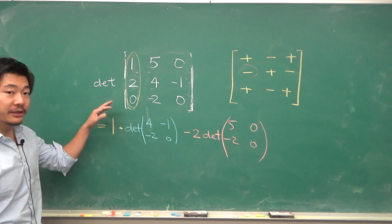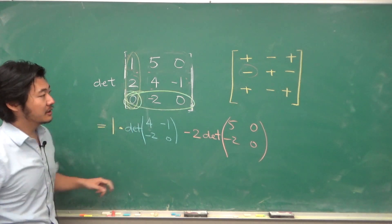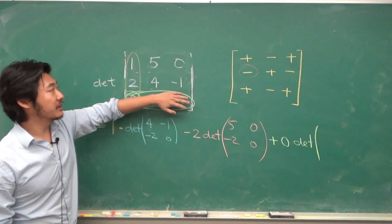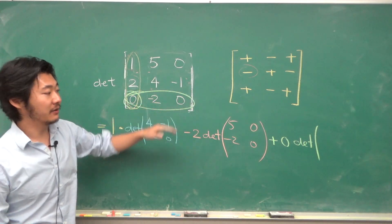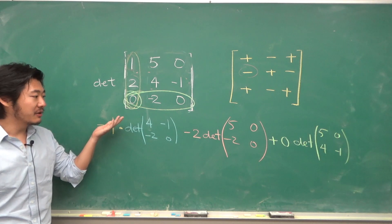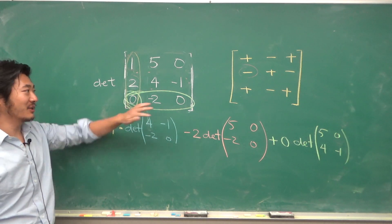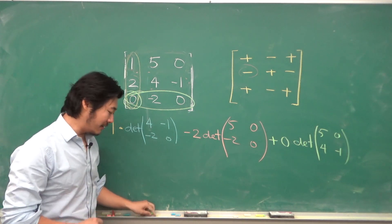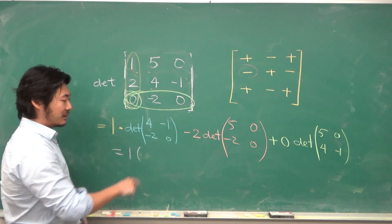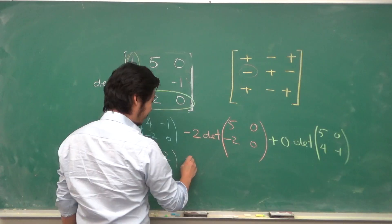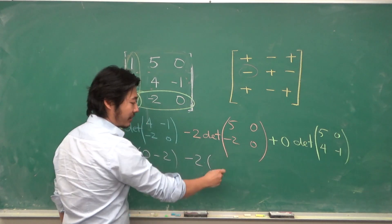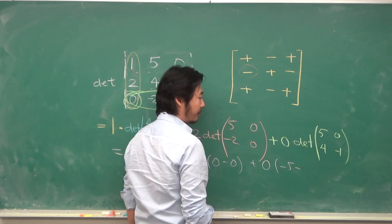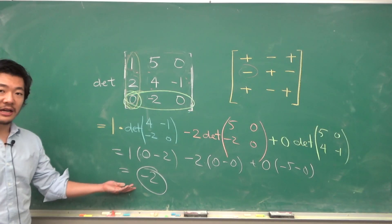Finally, we go down to the last row. It's at a plus sign, so it's plus 0 times the determinant of the submatrix 5, 0, 4, negative 1. Although we're multiplying by 0, so it doesn't really matter what that matrix was — but if it wasn't 0, it would matter. Computing these out: 1 times (0 minus 2) minus 2 times (0 minus 0) plus 0 times (negative 5 minus 0) gives us negative 2. That's the determinant.